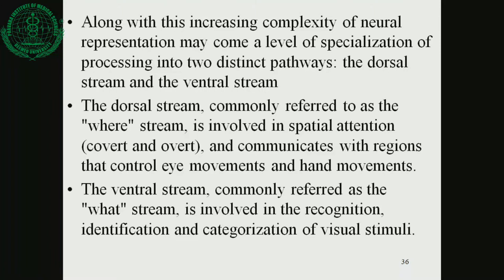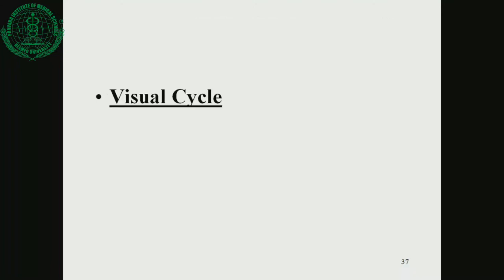Neural representation may come to a level of specialization processing into two distinct pathways: the dorsal stream and the ventral stream. The dorsal stream, commonly referred to as the 'where' stream, is involved in spatial attention and controlling eye movements and hand movements. The ventral stream, commonly referred to as the 'what' stream, is involved in recognition, identification, and categorization of visual stimuli. We will now proceed to the second concept, which is known as the visual cycle.